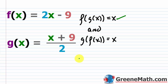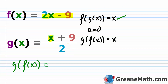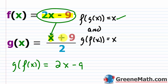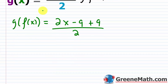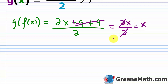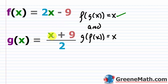And now let's do g of f of x. We'll take g of x, and everywhere there's an x, we're going to plug in f of x — so 2x minus 9 gets plugged in there. You'd have 2x minus 9 plus 9, over 2. So we have minus 9 plus 9, which is 0. You can cancel those out and say this is 2x over 2, which is just x. So we've proved the other condition. So f of g of x is equal to x, and g of f of x is equal to x. So if both of those are true, they're inverses.